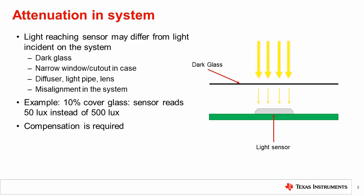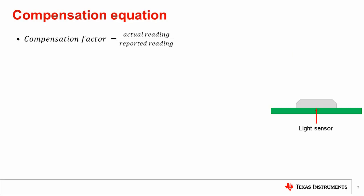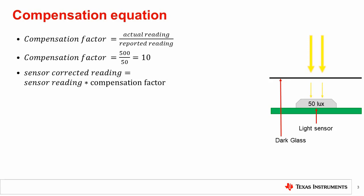We introduced compensation in the previous video to account for non-uniformity and apply a correction to the lux meter. In this case, the sensor requires a compensation factor to correct the light level. The same formula is used to calculate the compensation factor by dividing the actual lux by the reported lux. In this case, a correction factor of 10 is calculated and applied to the sensor reading, as shown.